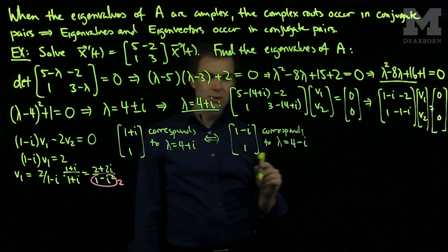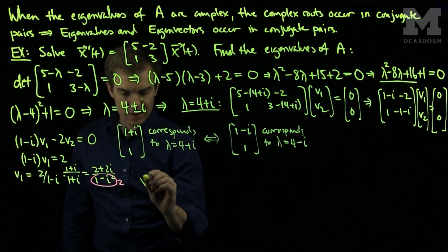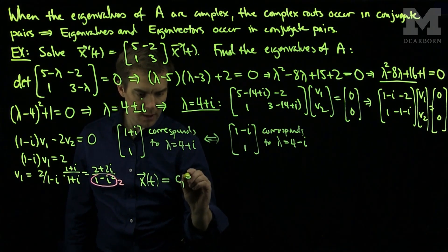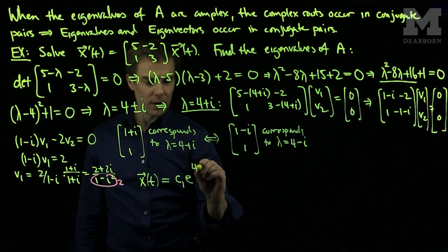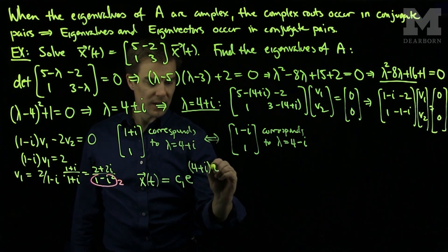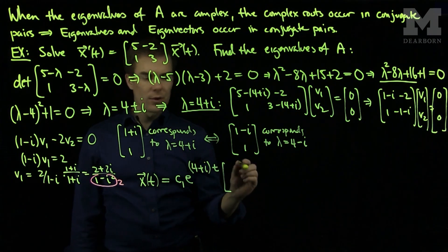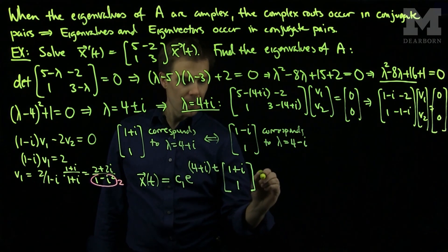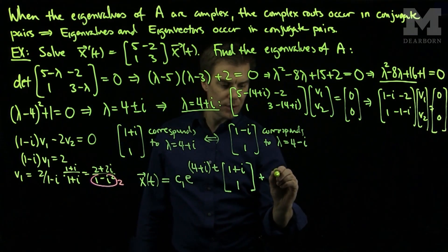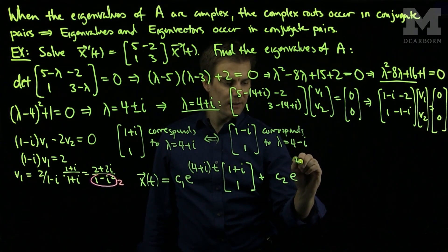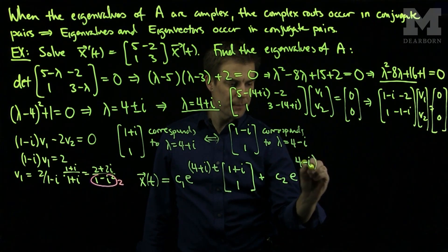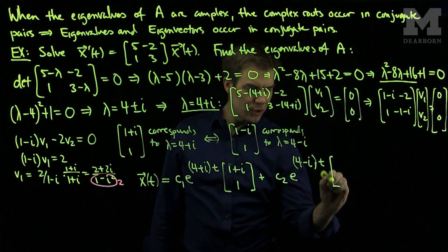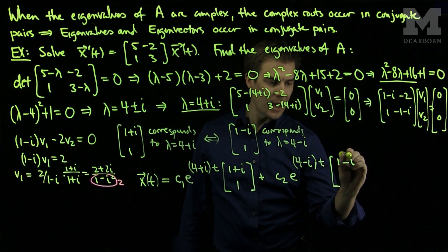Now I can write down the solution to our problem. The solution x(t) will be c₁e^{(4+i)t} times [1+i; 1] plus c₂e^{(4-i)t} times [1-i; 1].